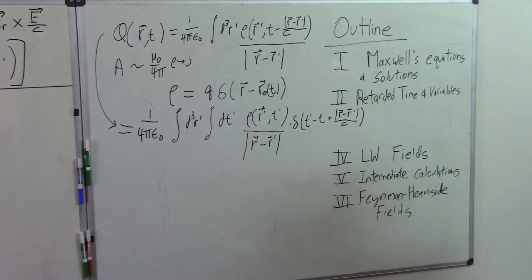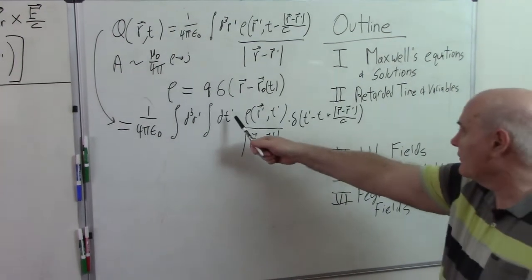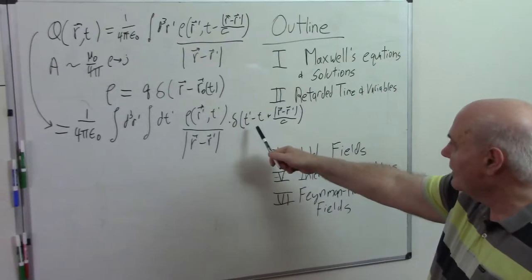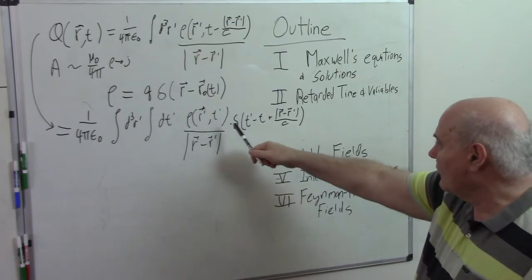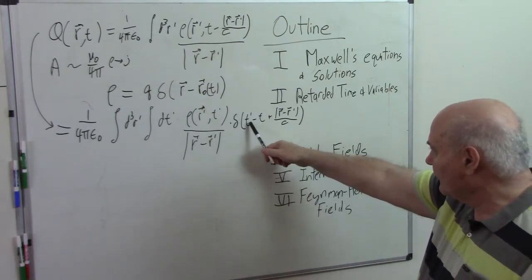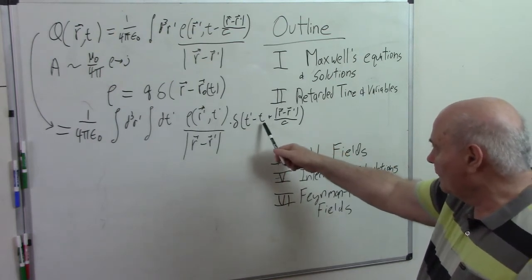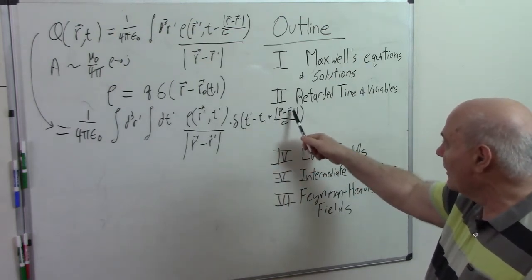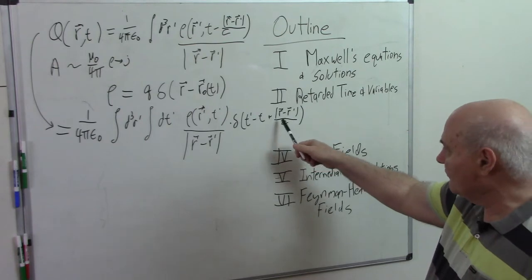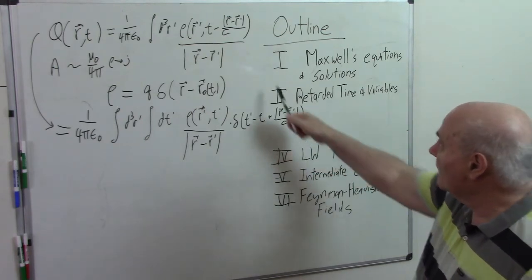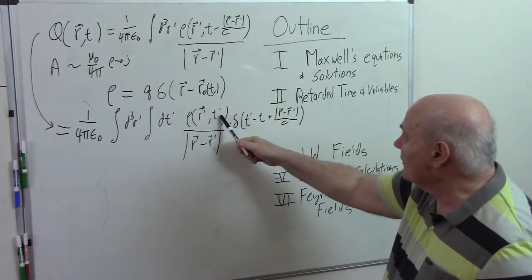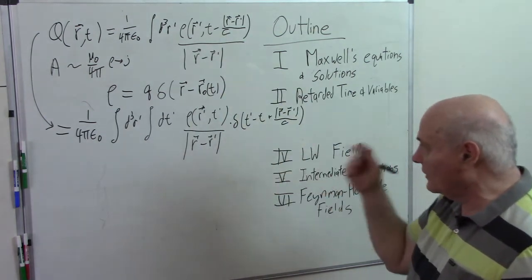So how does this work? Well, if you do the t' integral, this is just the delta function. So you integrate over all time. That means you simply set the variable time so that this whole thing is 0. So that ends up being t minus (r - r')/c, basically the retarded time. And that's what we have here. So for t' in the rho, that becomes there. This doesn't change.